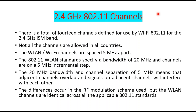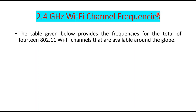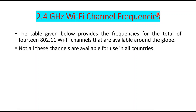The differences between channels occur in the RF modulation scheme. A table is provided showing all the frequencies of the total 14 802.11 Wi-Fi channels. Not all these channels are available in all countries. Channel numbers in the 2.4 GHz band start from channel 1 and go up to 14.